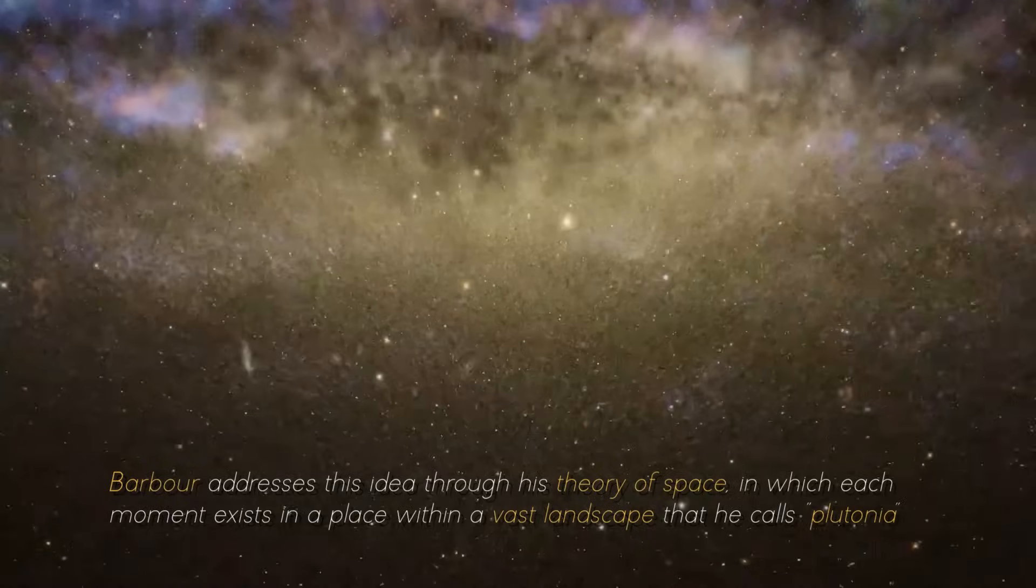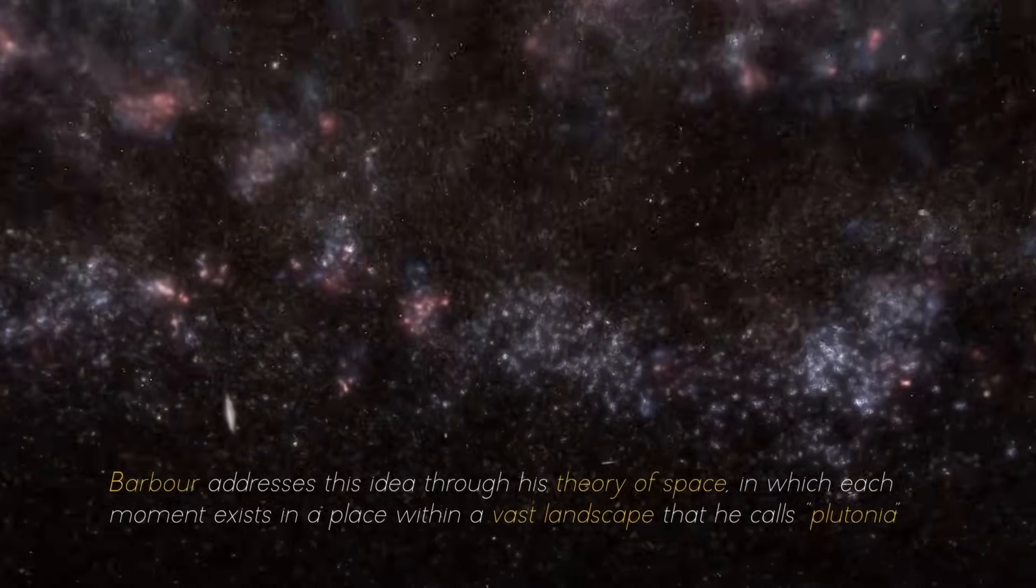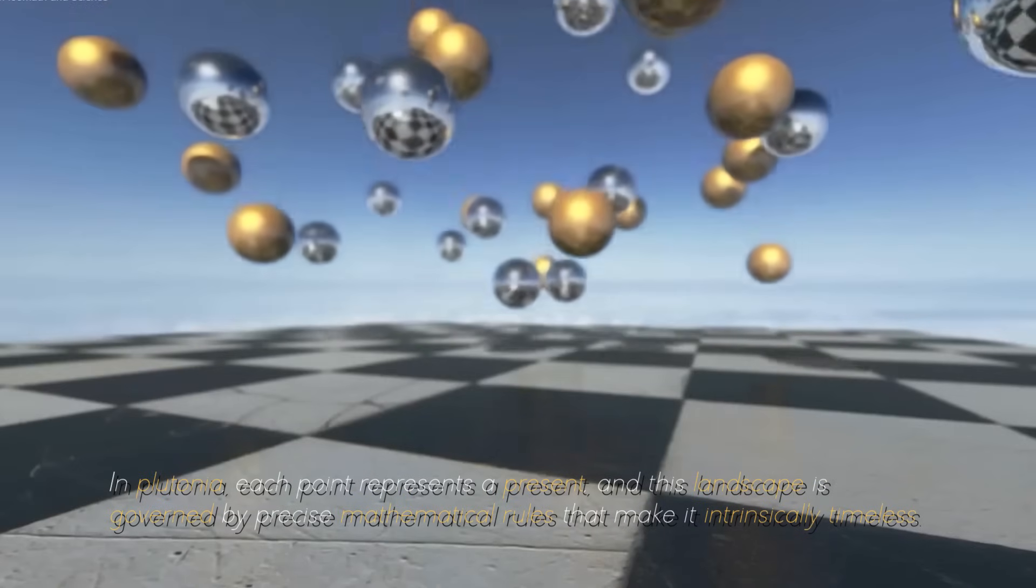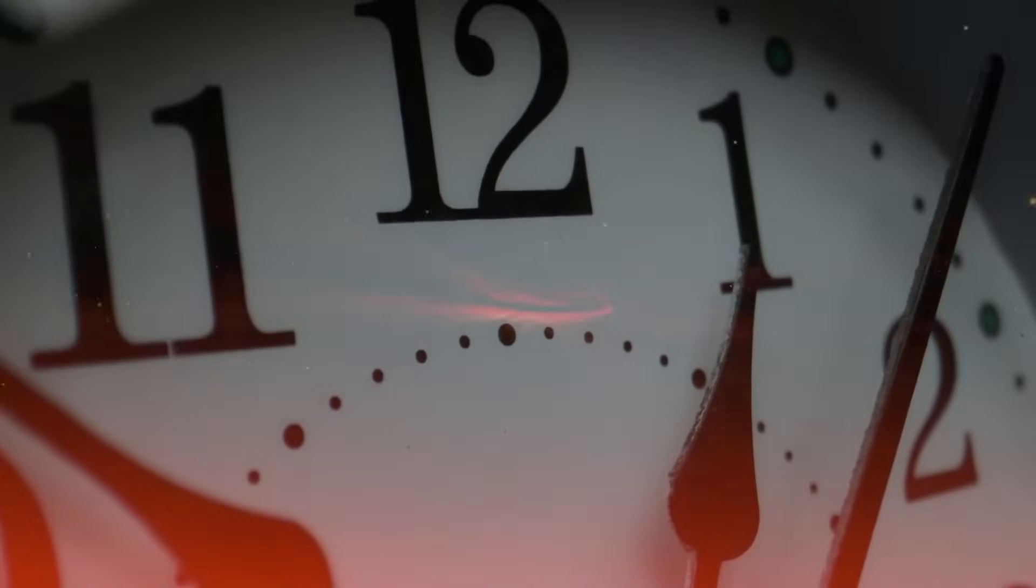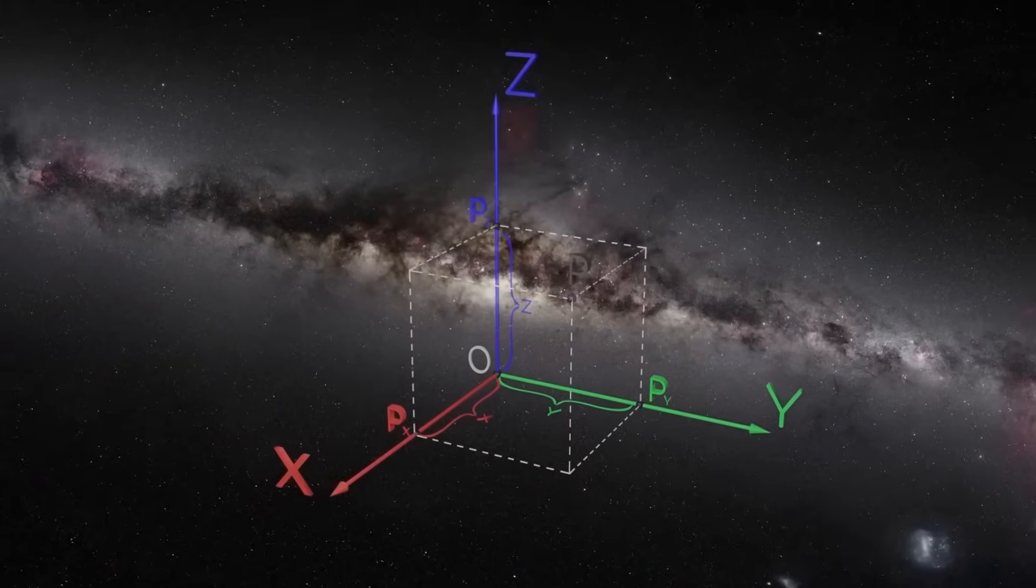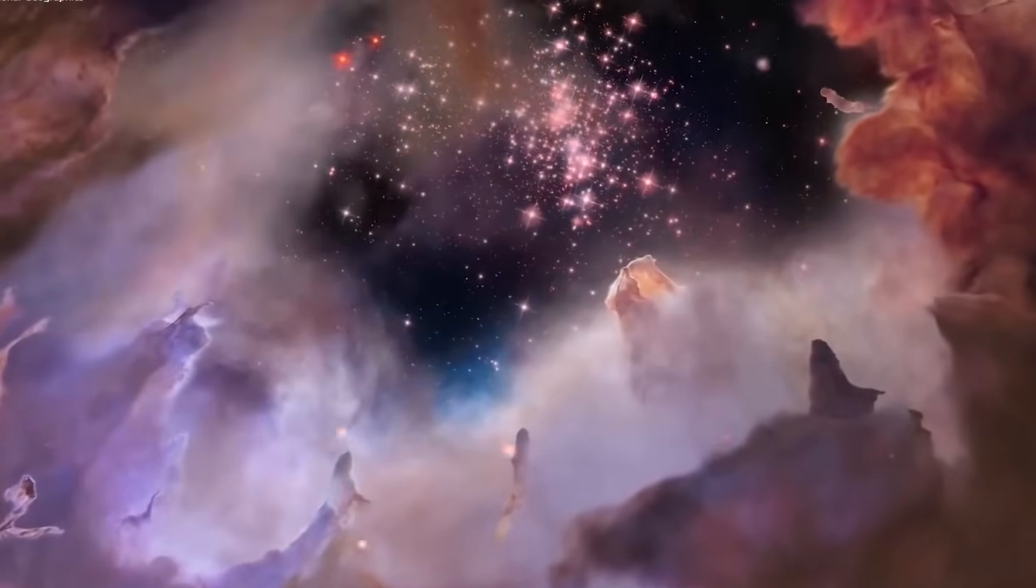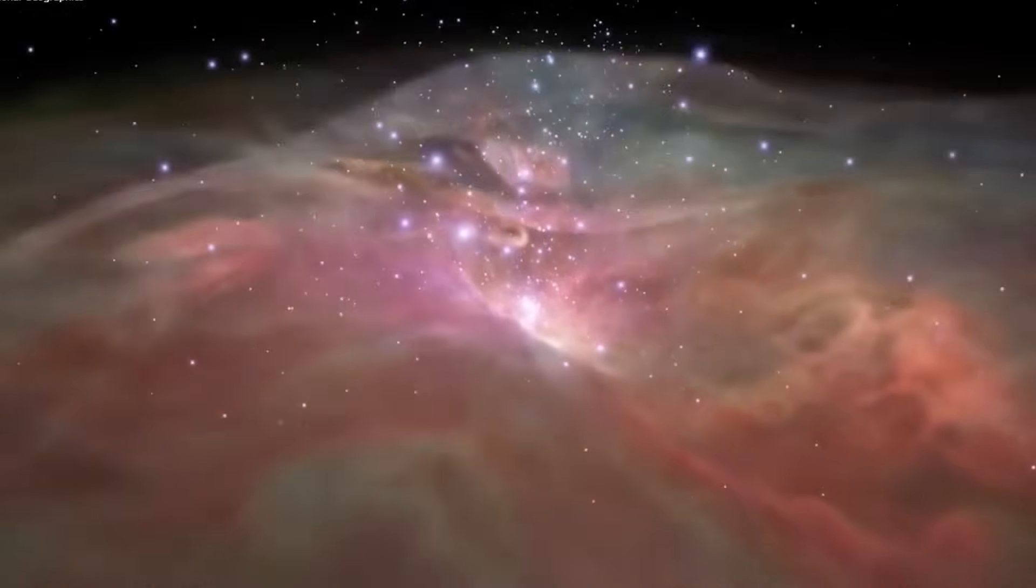Barber addresses this idea throughout his series on space, in which each moment exists in a place within a vast landscape that he calls Platonia. In Platonia, each point represents a present, and this landscape is governed by precise mathematical rules that make it intrinsically timeless. This perspective is related to the renowned name of Albert Einstein, whose theory of space-time is fundamental to our current understanding of the universe. However, the implications of this theory, and our understanding of it, have raised significant questions. If Einstein's concept of space-time were to be proven incorrect at some point, would it be necessary to discard it altogether in pursuit of a more accurate understanding of the universe?